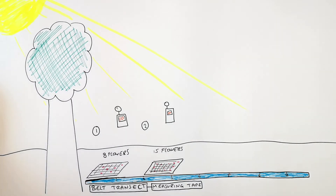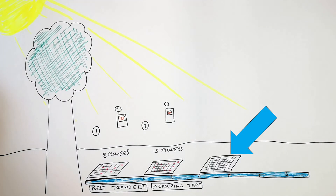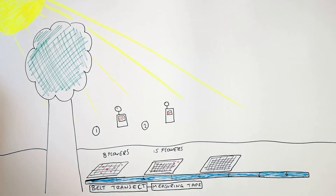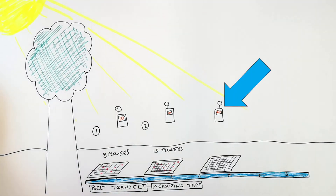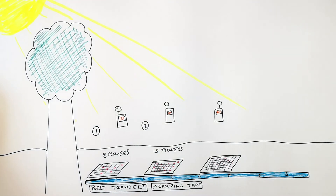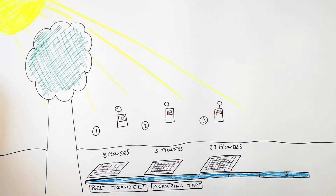You now lay the quadrat 1 metre further away and count the flowers and measure the light intensity. We are now further away from the tree so the light intensity is higher at 40. Then count the number of flowers — in this quadrat there are 29 flowers.